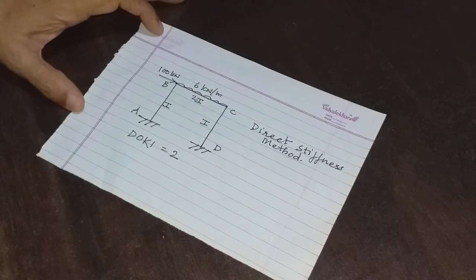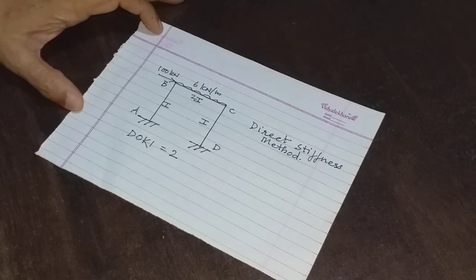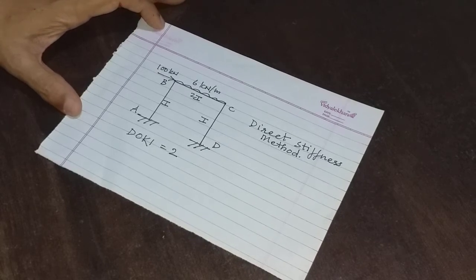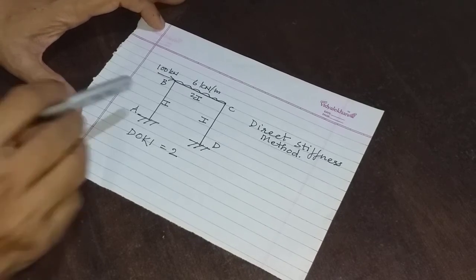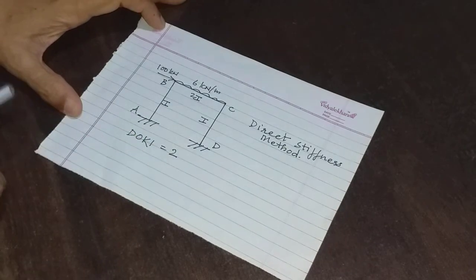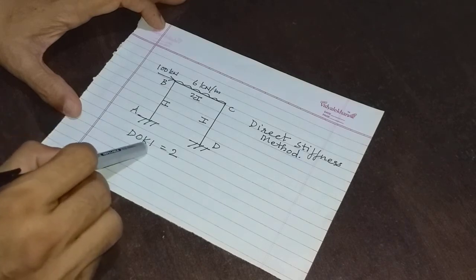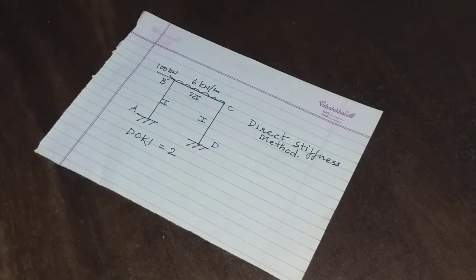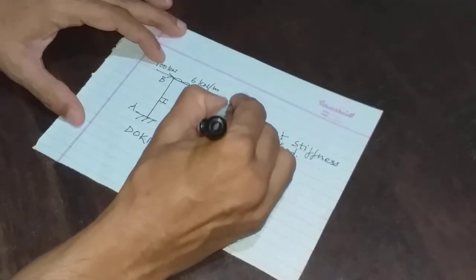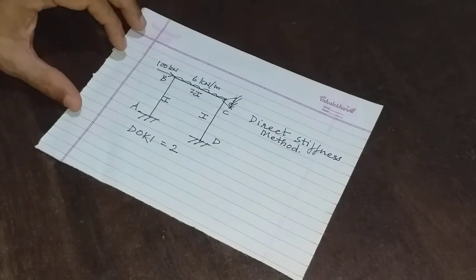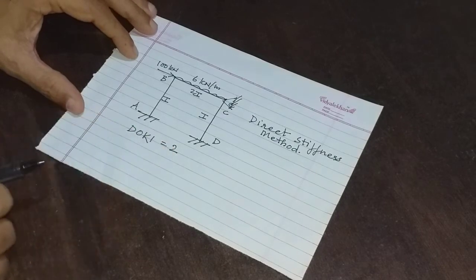Welcome friends. If you remember in our last lecture, we were discussing analysis of a frame using the direct stiffness method. This was the frame we were analyzing. We determined that the degree of kinematic indeterminacy for the frame was equal to 2. There was a hinge at C, so the degree of kinematic indeterminacy was 2.